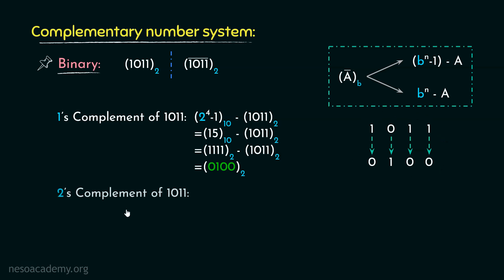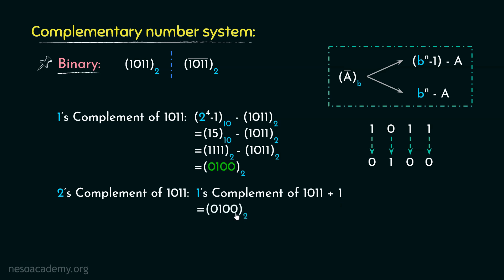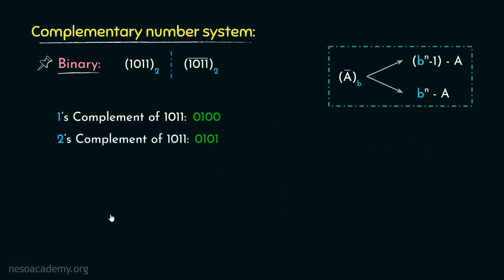Now the radix or 2's complement of 1011 can be obtained by taking the 1's complement of 1011 and adding 1 to it. The 1's complement of 1011 is 0100. If we add 1 to it, we will obtain 0101. For determining the 2's complement of any binary number, there is also another trick — let me show you that.